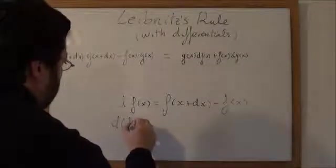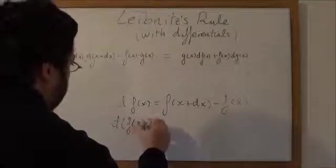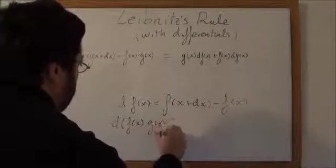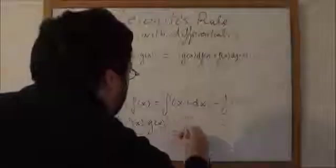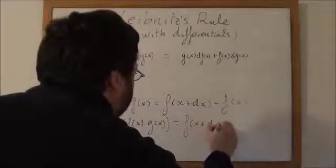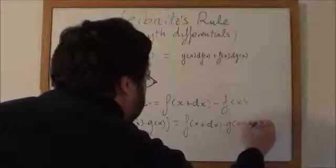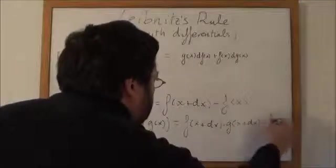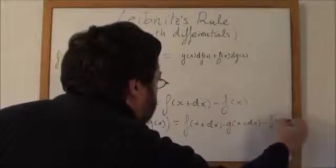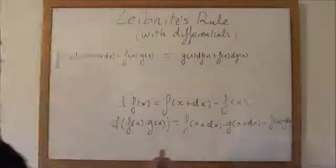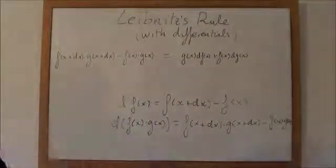If we apply this to the product of two functions, differential of f of x times g of x equals f of x plus differential of x minus f of x times g of x. And that's exactly what we have here.